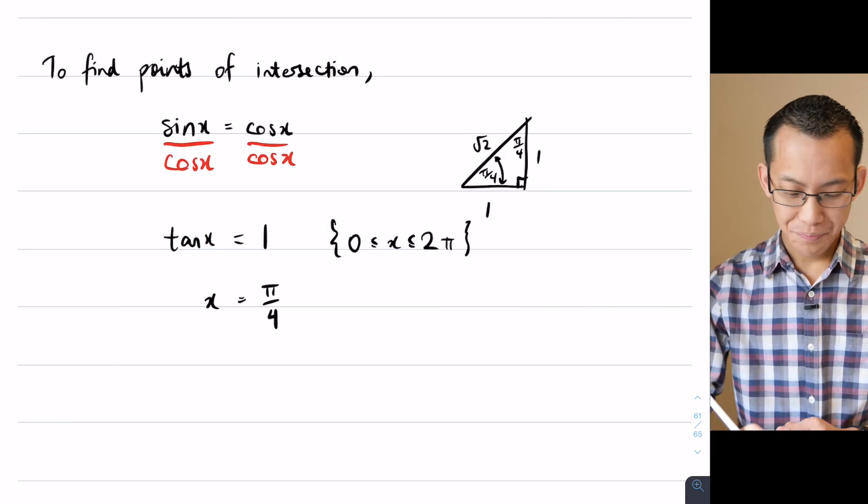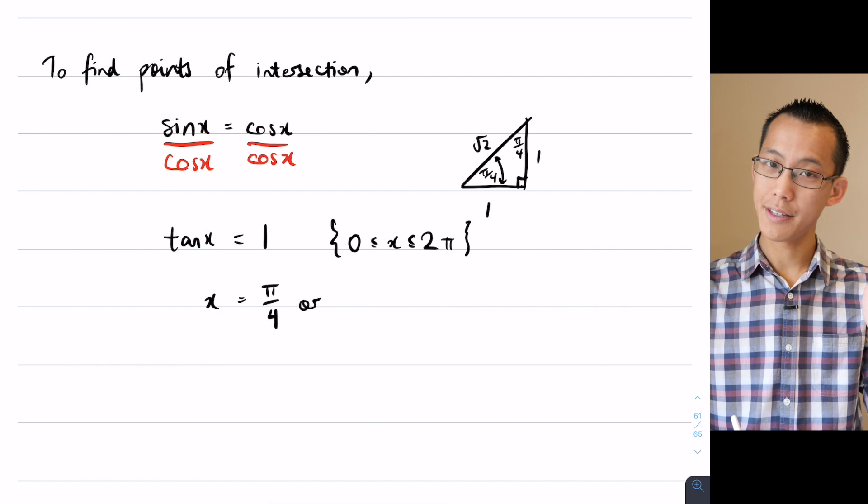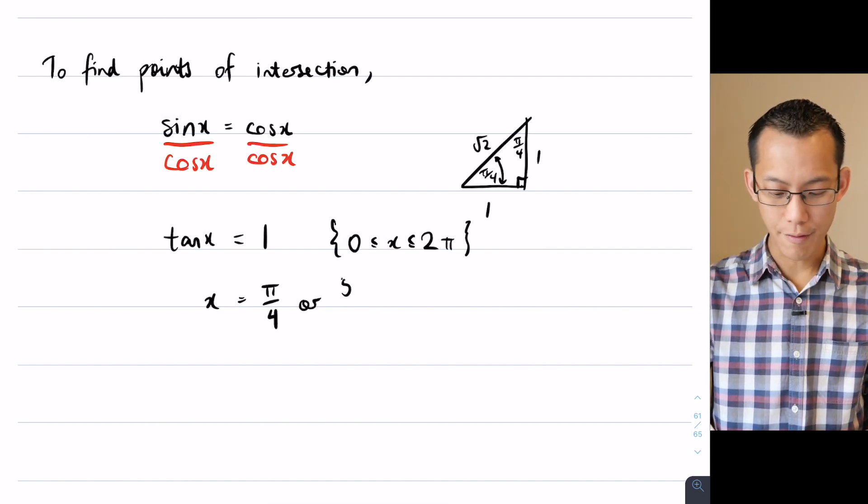So if I have a solution at π on 4, then I also have a solution π radians later, which is 5π on 4.